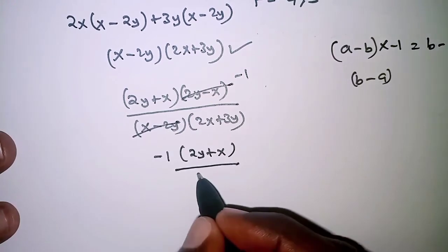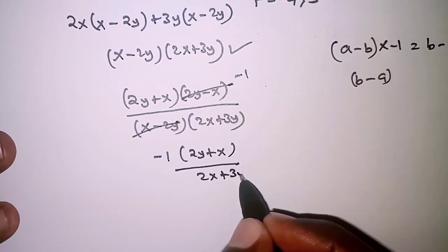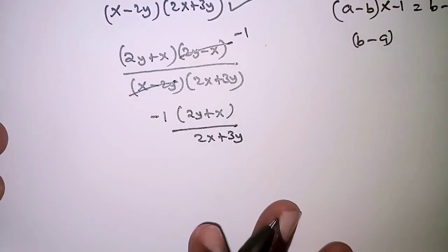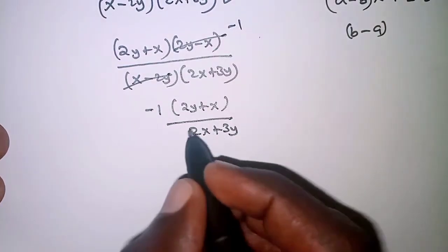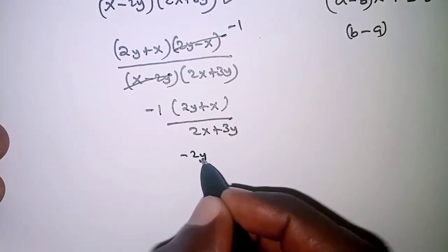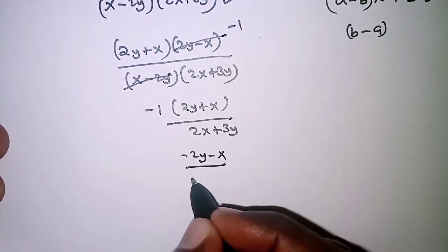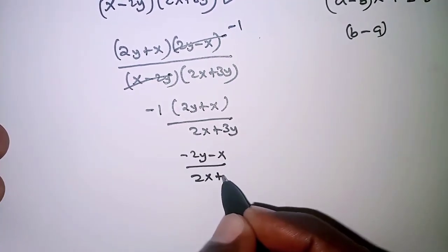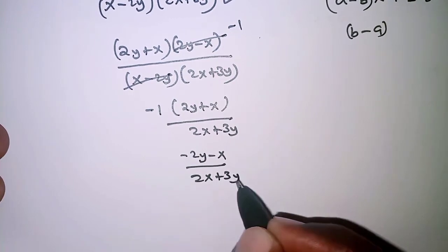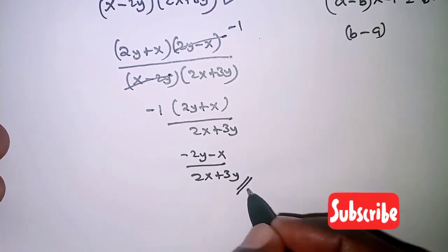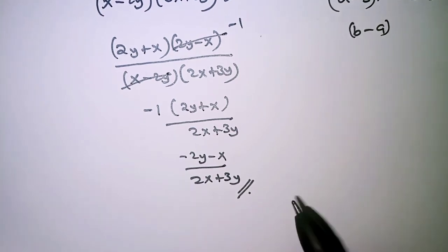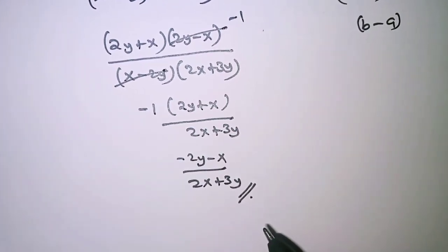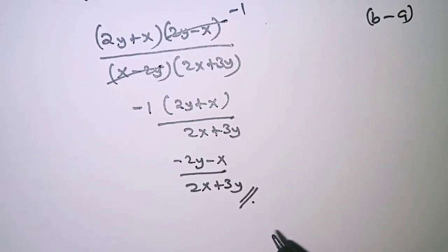Opening the brackets, we have (-2y - x) / (2x + 3y), and that is the final answer. Thank you for watching, hope to see you in the next video.